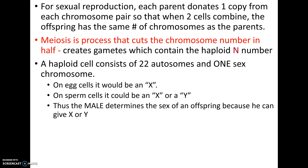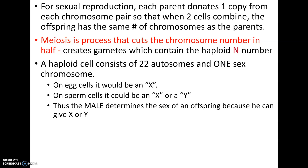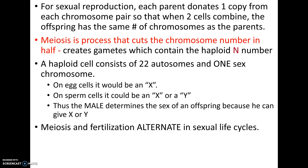A single haploid human cell — like an egg or sperm — has 22 autosomes and one sex chromosome. An egg cell must carry an X chromosome because females are XX. Males are XY, so their sperm can carry either an X or a Y. A sperm with an X that fertilizes an egg produces a girl; a sperm with a Y produces a boy. This is how sex is determined in humans and, as far as we know, in all mammals.